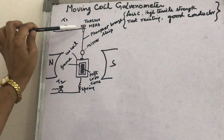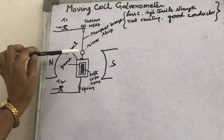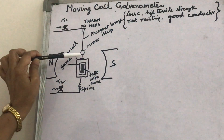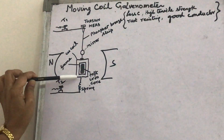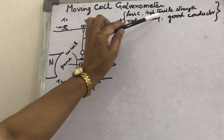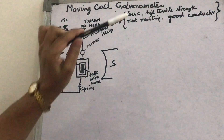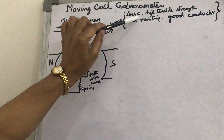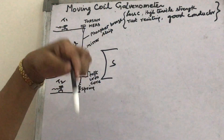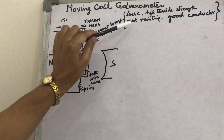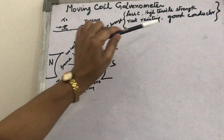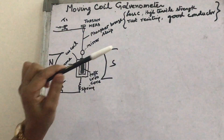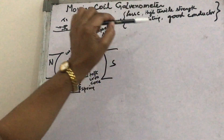Why is phosphor bronze strip used? Because through it the coil is suspended — it has high tensile strength so it can hold the large number of turns in the coil. Its torsional constant C is less, which makes the current sensitivity of the galvanometer greater. It is also rust-proof, a good conductor, and has less elastic after effect. These properties are also asked in examinations.